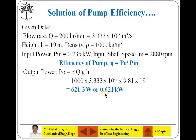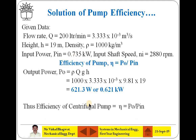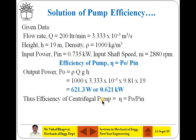The output power comes out to be 0.621 kW. Knowing the input is 0.735 kW, efficiency for the centrifugal pump is 0.621 divided by 0.735, giving an answer of 84.5%.